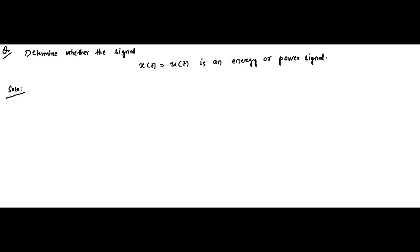The unit step signal has a basic representation: for t greater than 0 up to infinity it is 1, and for t less than 0, that is negative time, it is 0. This is the unit step signal.